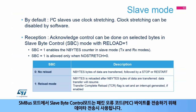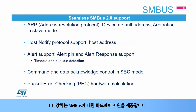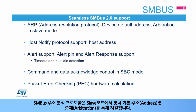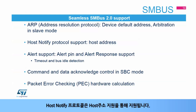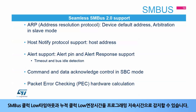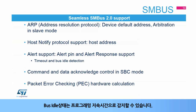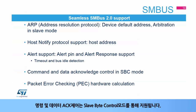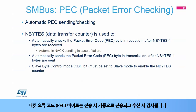In SMBus mode, slave byte control mode is used in transmission for sending the PEC or packet error code byte. The I2C peripheral provides hardware support for SMBus. The SMBus address resolution protocol is supported through the device default address and arbitration in slave mode. The host notify protocol is supported with host address support. The alert protocol is supported through the SMBus alert pin and alert response address. The SMBus clock low timeout and cumulative clock low extend times can be detected with a programmable duration. The bus idle condition can be detected with a programmable duration. Command and data acknowledge control is supported through slave byte control mode. The packet error code or PEC byte is calculated by hardware and automatically sent in transmission and checked in reception.